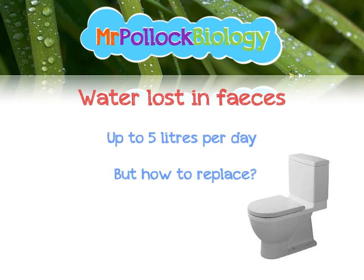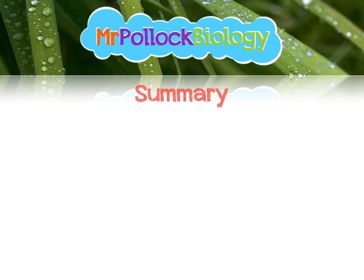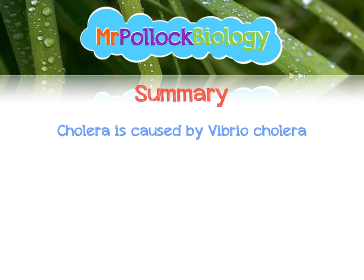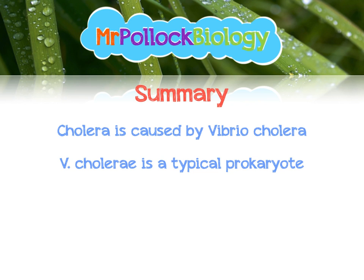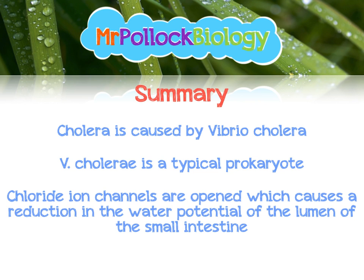How do we replace this fluid and treat cholera? That's a topic for another video — click the card above to go there. To summarise: cholera is caused by Vibrio cholerae, a typical prokaryote. The cholera toxin opens chloride ion channels, causing a reduction in the water potential of the lumen of the small intestine, and water is lost by osmosis. I hope that's been helpful. Thank you very much for watching — please like, comment, and subscribe.